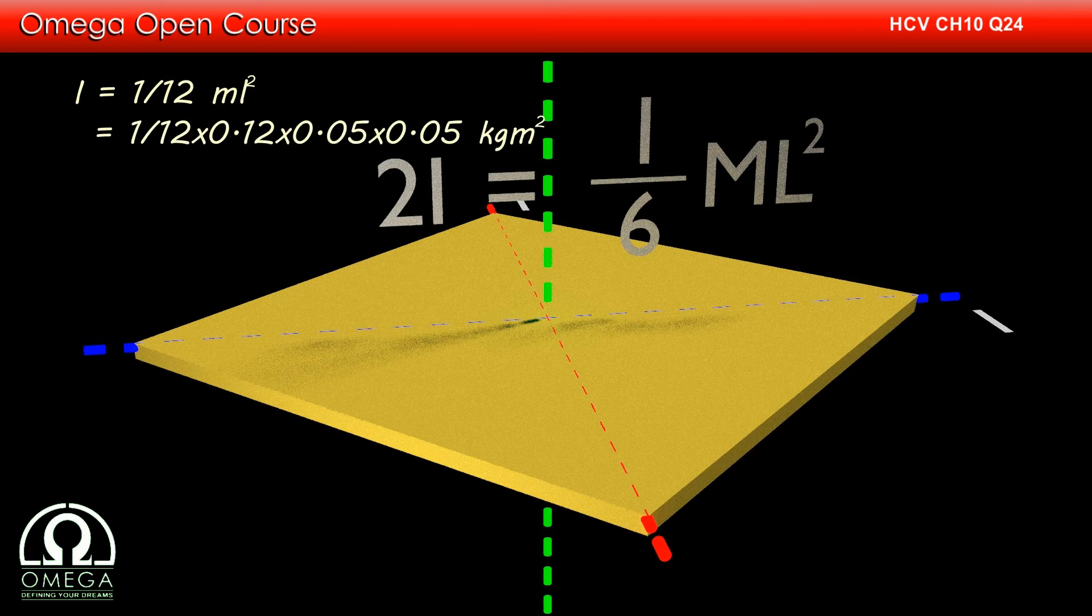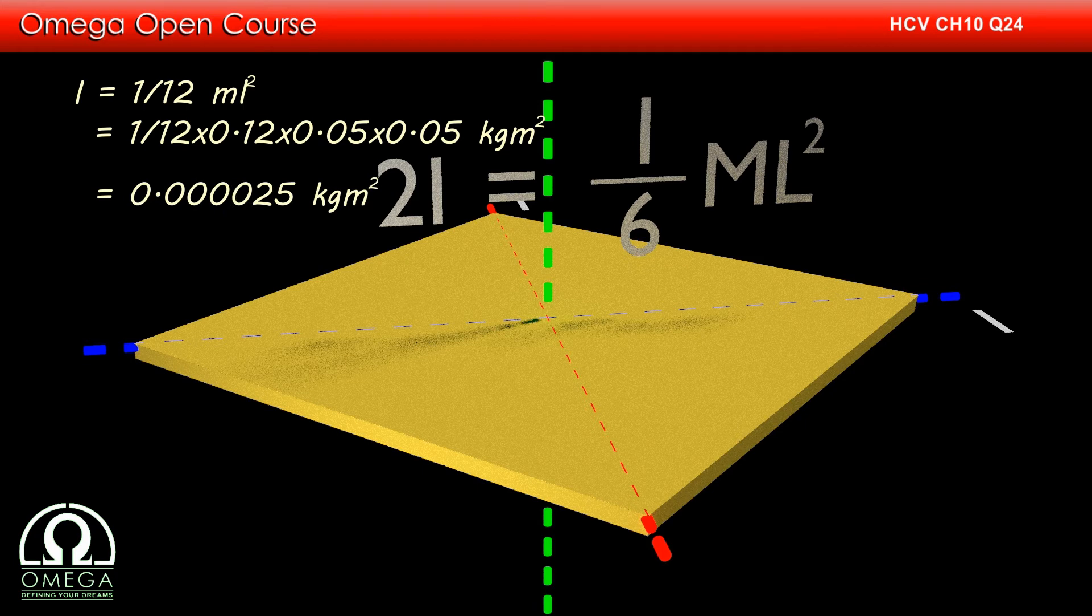Putting the values of m and l, we get 1 by 12 into 0.12 into 0.05 into 0.05 kg meter squared, or 0.000025 kg meter squared.